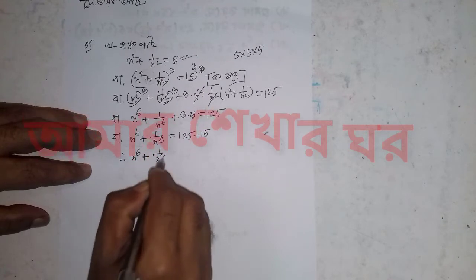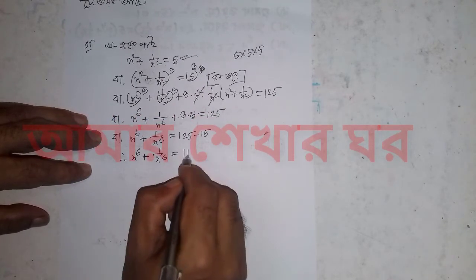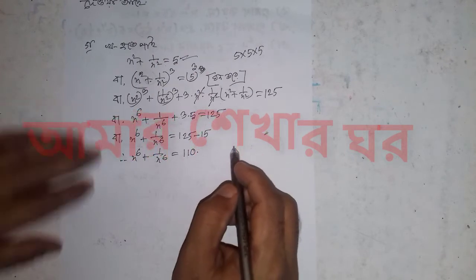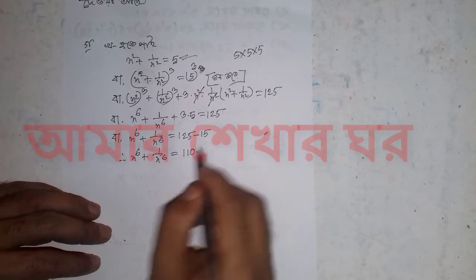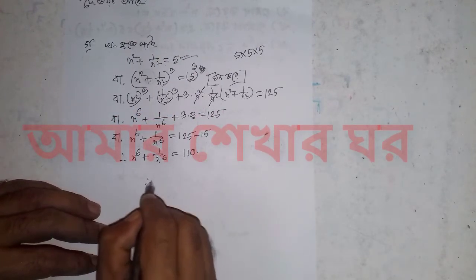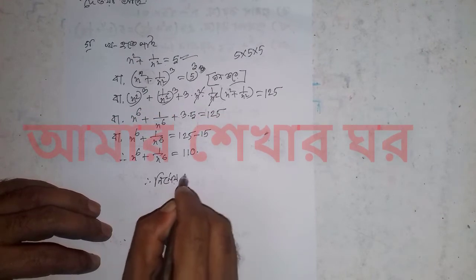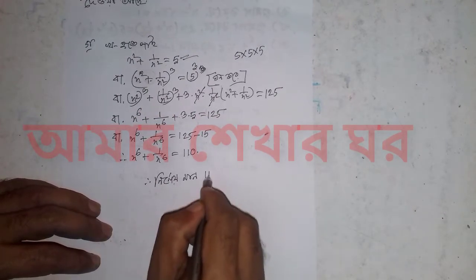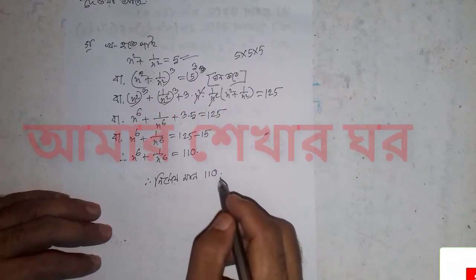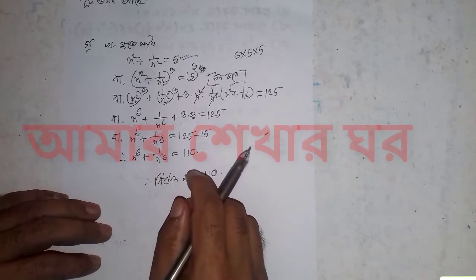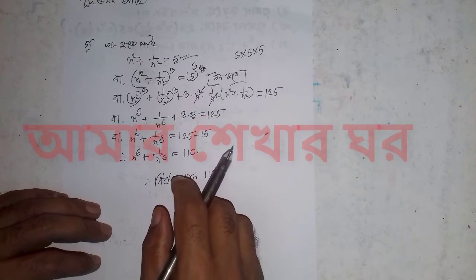1 by x to the power 6 is equal to 1, 1, 0. So this is 1, 1, 0. This is 1, 2, 0.